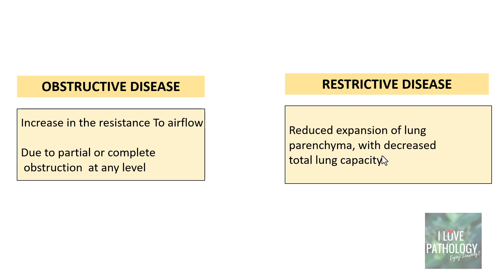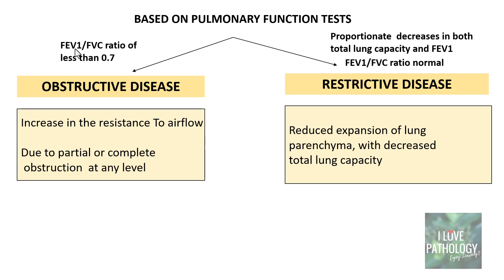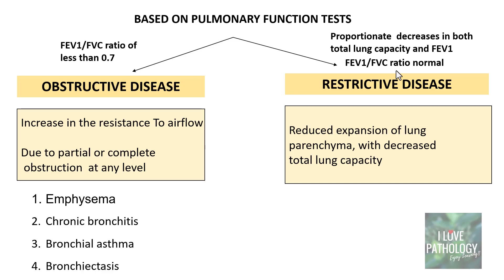This classification is based on pulmonary function test. In obstructive lung disease, the ratio of forced expiratory volume at first second to forced vital capacity is less than 0.7. Whereas in restrictive lung diseases, there is a proportionate decrease in both total lung capacity as well as FEV1, which is why the FEV1/FVC ratio is normal. Examples of obstructive diseases include emphysema, chronic bronchitis, bronchial asthma, and bronchiectasis.